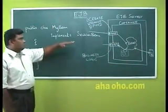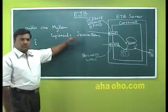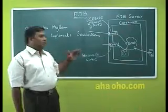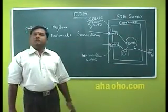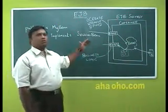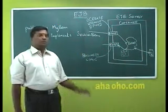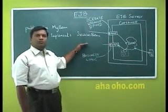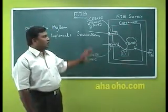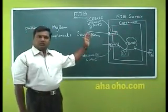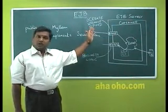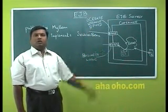The methods are: ejbActivate, ejbPassivate, ejbCreate, ejbPostCreate, setSessionContext, and getSessionContext. These are all the methods you have to implement in the session bean. The purpose of implementing all these methods is that this is how the framework and technology is designed to manage the bean lifecycle.